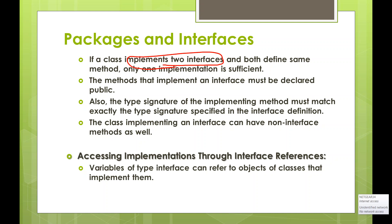If a class implements any number of interfaces, it must provide implementation for all methods in all those interfaces. For example, class A implements B, C, D, E ... T — whatever methods are defined across all those interfaces must be provided by class A. If two interfaces define the same method, only one implementation is needed.